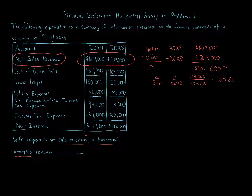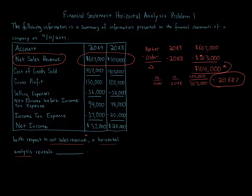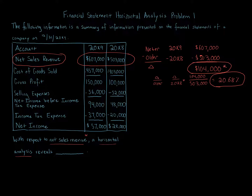That percentage equals 20.68%. So when doing horizontal analysis of net sales revenue, we have a dollar change of $104,000 and a percentage change of 20.68%. Remember, the earlier statement is normally used as the base year for the percentage calculation. We take the newer minus the older to get the change amount, and the same base year to calculate the percentage.